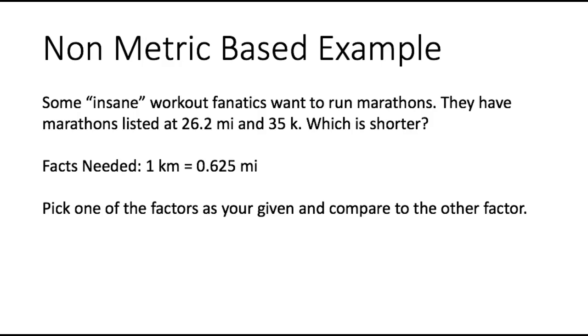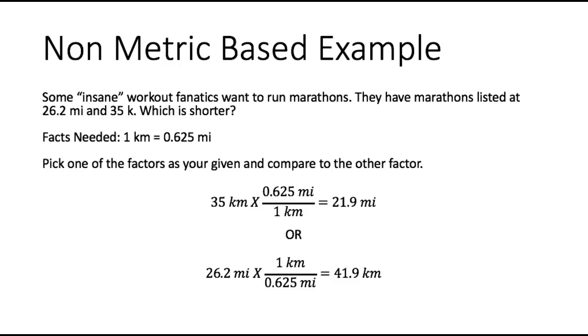So I'm going to pick one of the factors, 26.2 miles or 35 kilometers, as my given and I'm going to compare the answer to my problem with the other factor. So I'm either going to take 35 kilometers times 0.625 miles over 1 kilometer, which gives me 21.9 miles, or I'm going to do 26.2 miles times 1 kilometer over 0.625 miles, equals 41.9 kilometers.